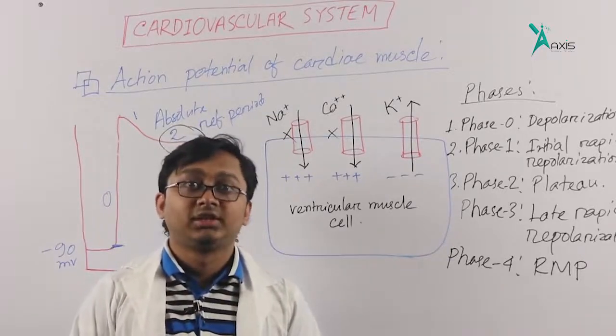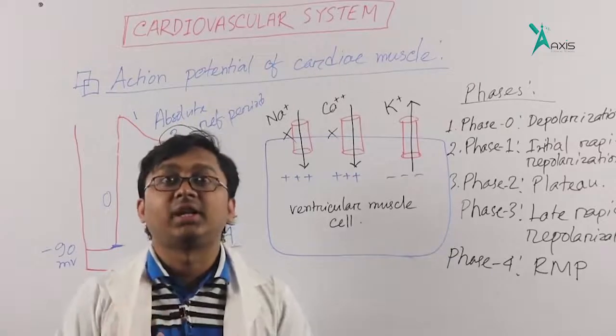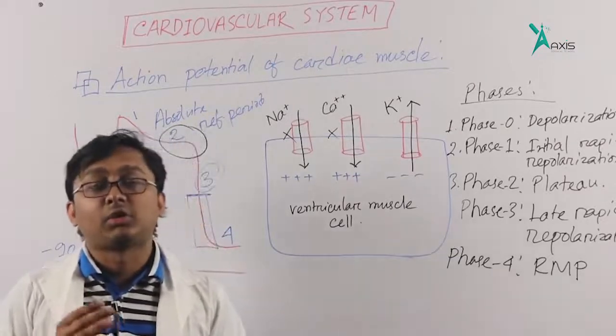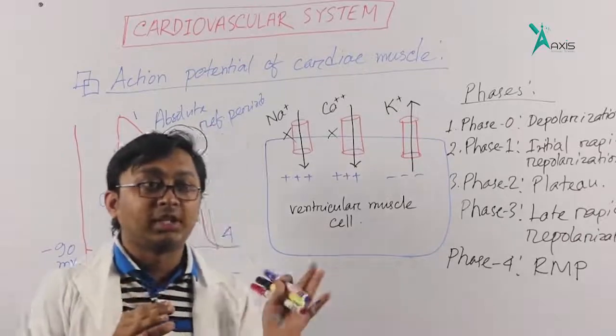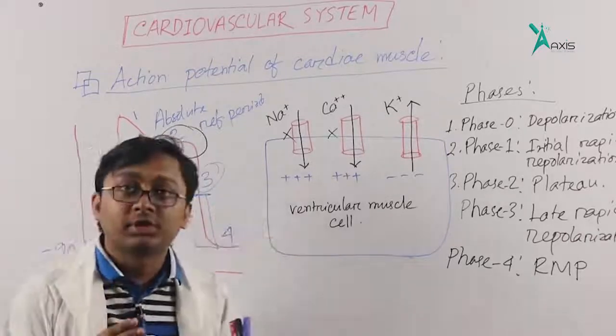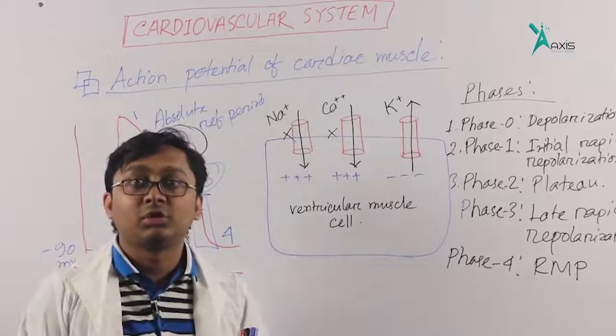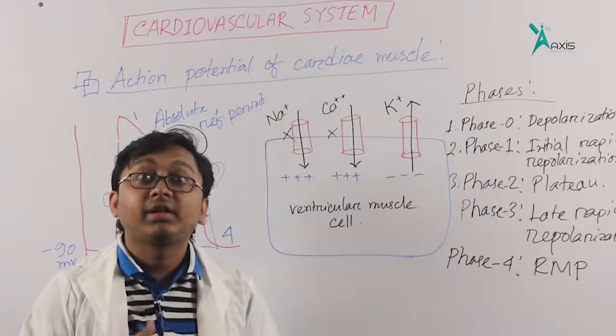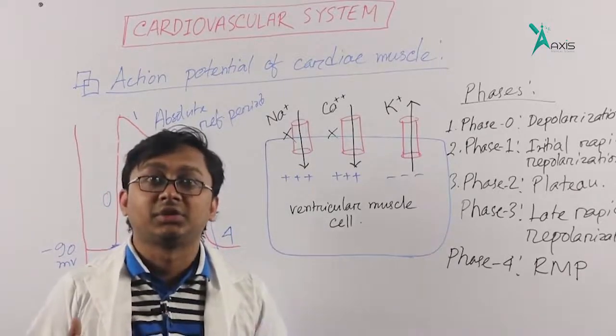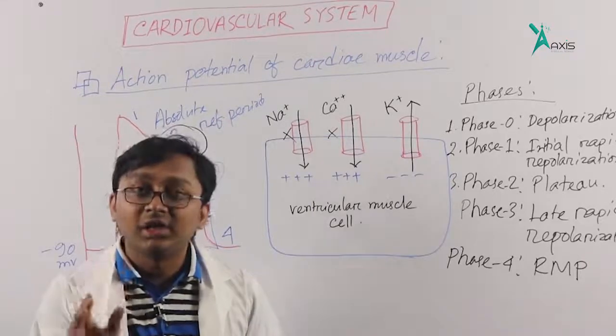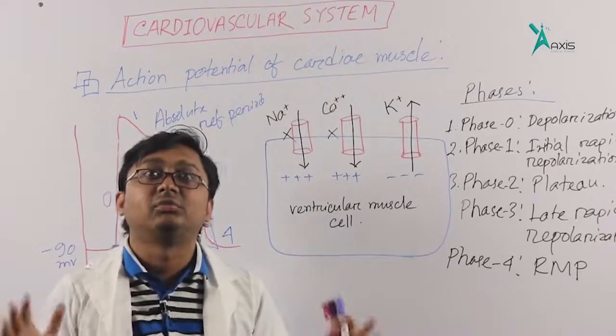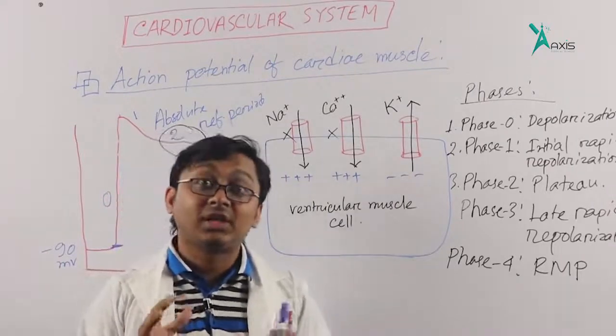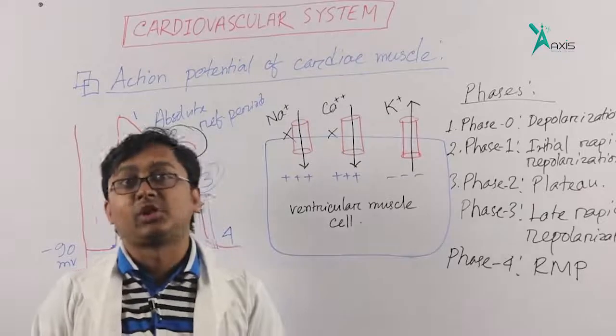If there was no refractory period in this action potential, that would cause erratic rhythm generation, which is arrhythmia. Arrhythmia pathophysiology is erratic rhythm generation. These are the importance of this refractory period. This is important for viva and also for written exams.